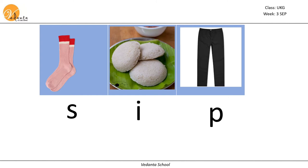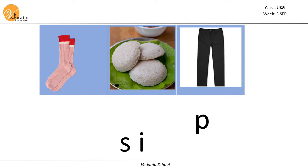Now let's blend the sounds: s, i, si — makes the sound si. P — sip. Sip. The sounds s, i, and p blend together to make the word 'sip'.